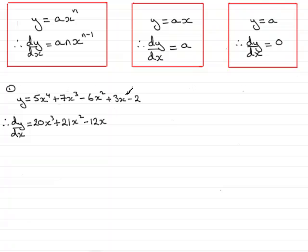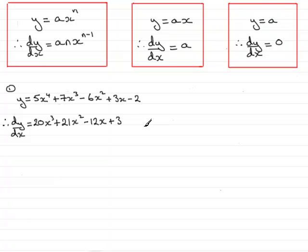When we come to the next term, plus 3x, to differentiate this kind of term you just get the constant in front of x, so that gives plus 3. And to differentiate the minus 2 with respect to x — minus 2 is a constant, so differentiating it leaves you with 0. We could write plus 0, but that's a bit silly so we just leave it off. That brings us to the end of the first example.